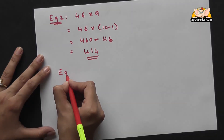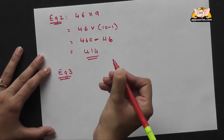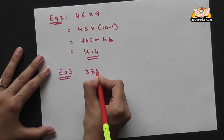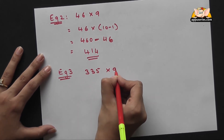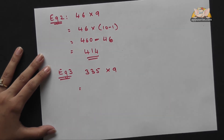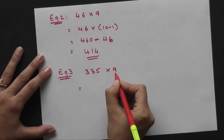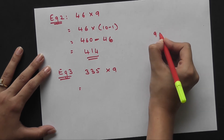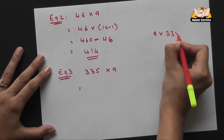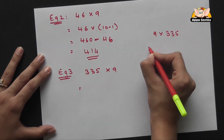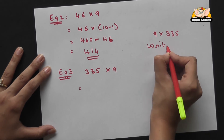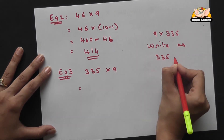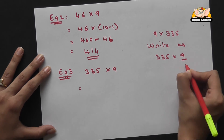I'll show you another example. We'll take a three-digit number now — say three thirty-five into nine. Now anytime you get a problem on multiplication by nine, if you get it as nine into three thirty-five, it'll be easier if you write it as three thirty-five into nine, so that it's easy to calculate with ten minus one.